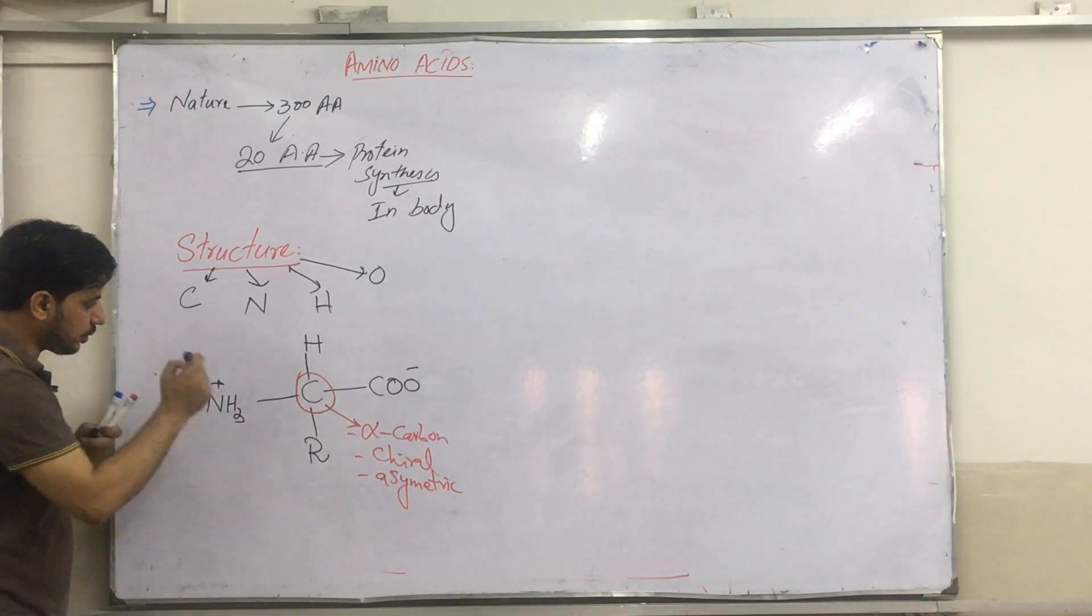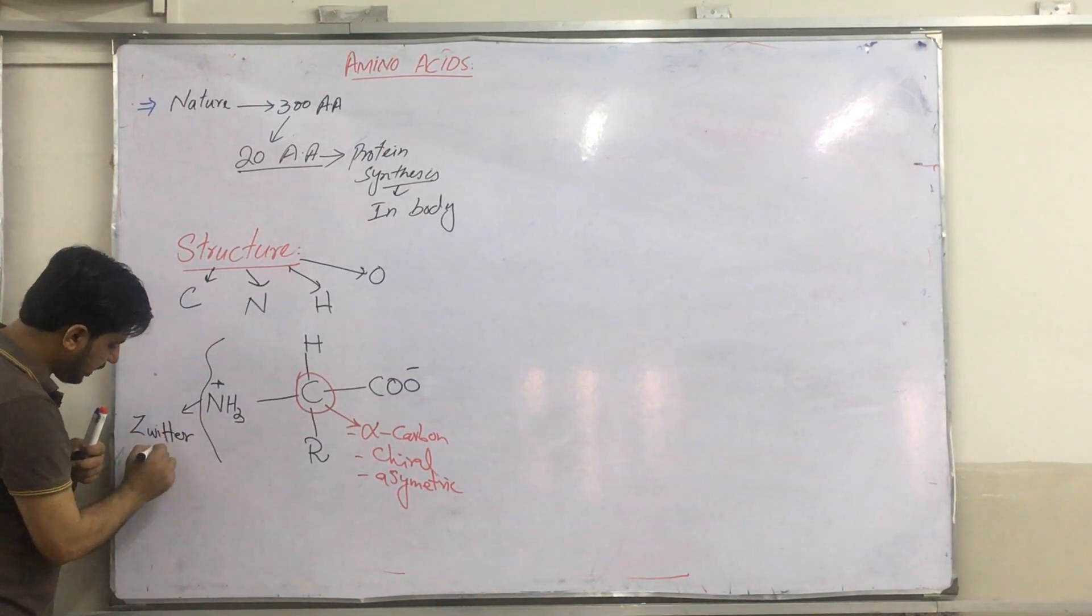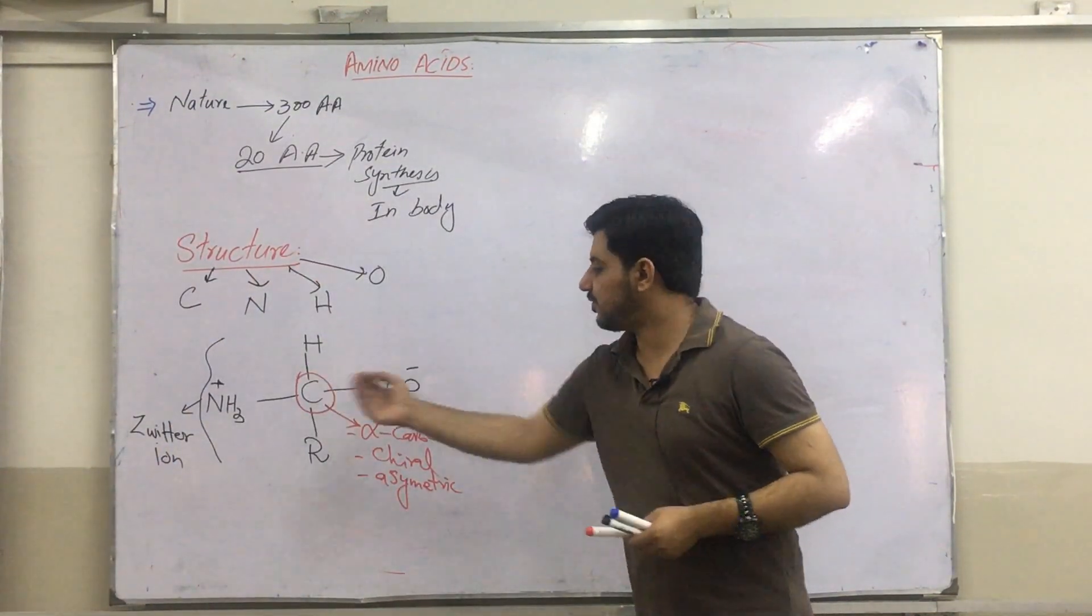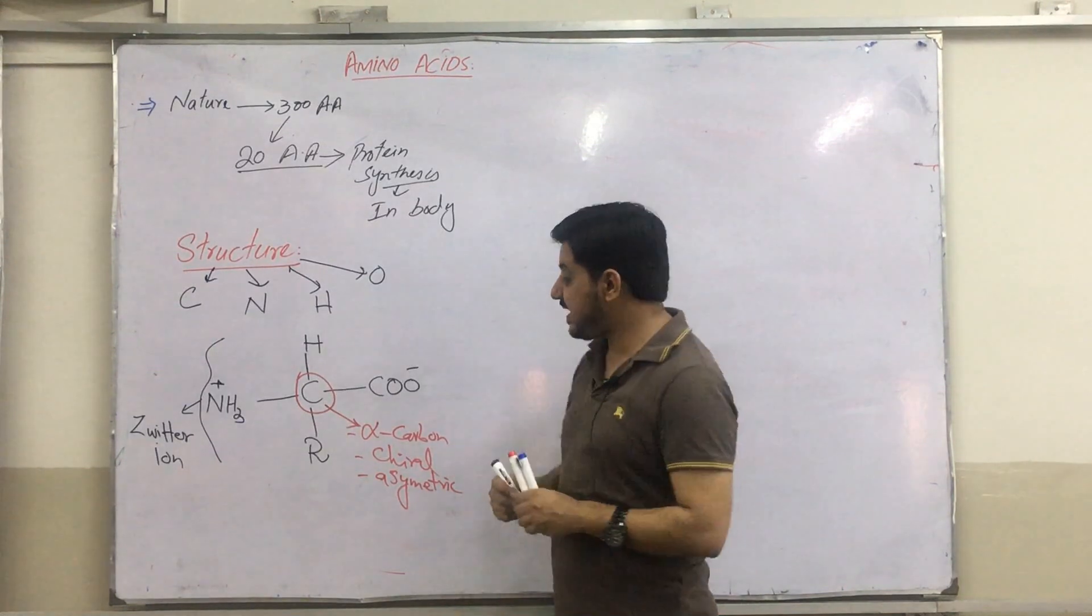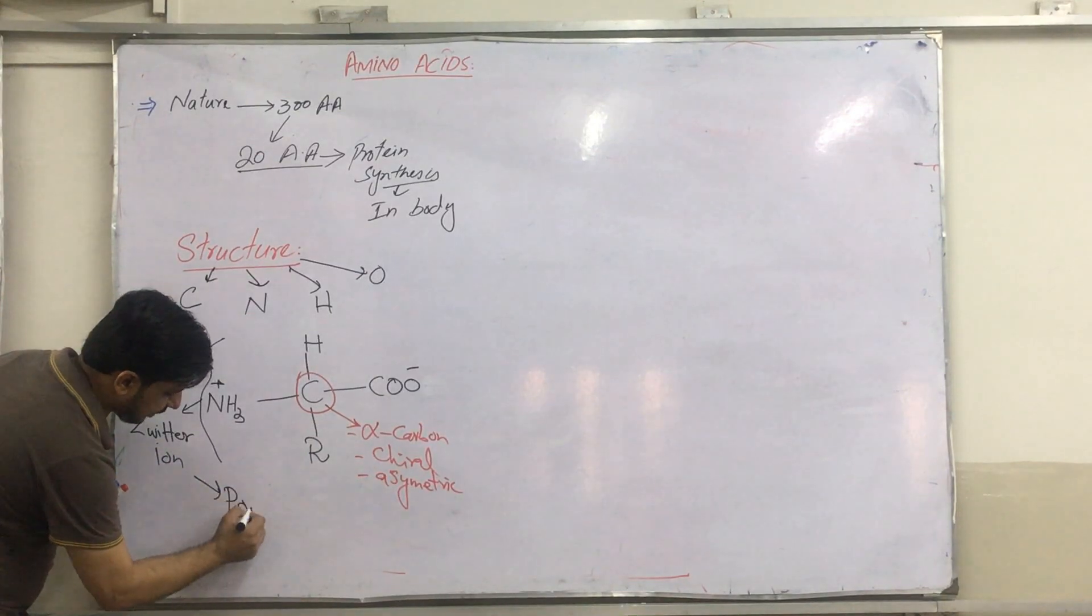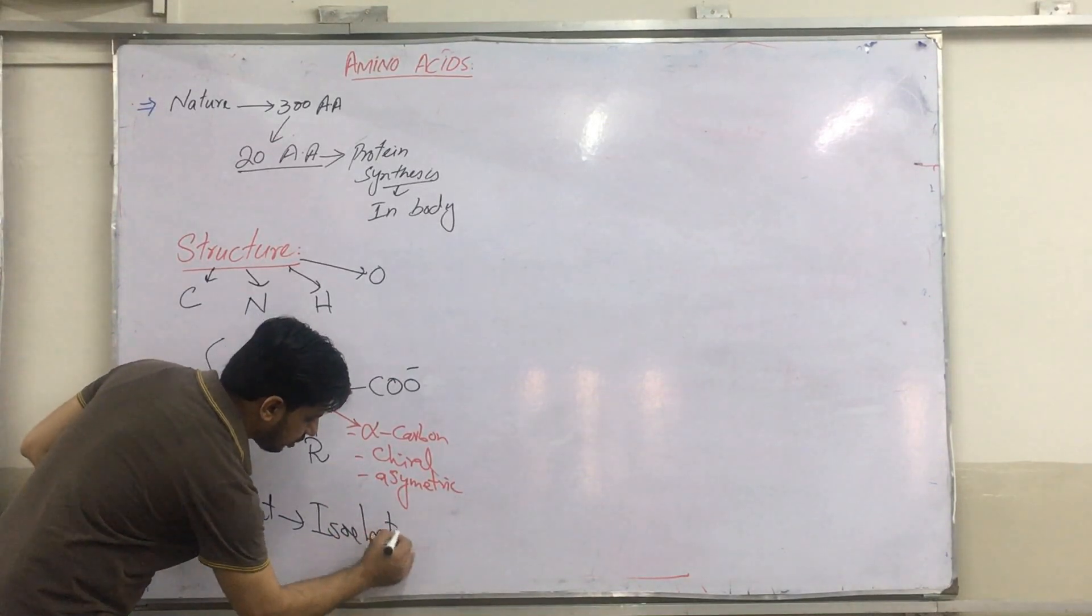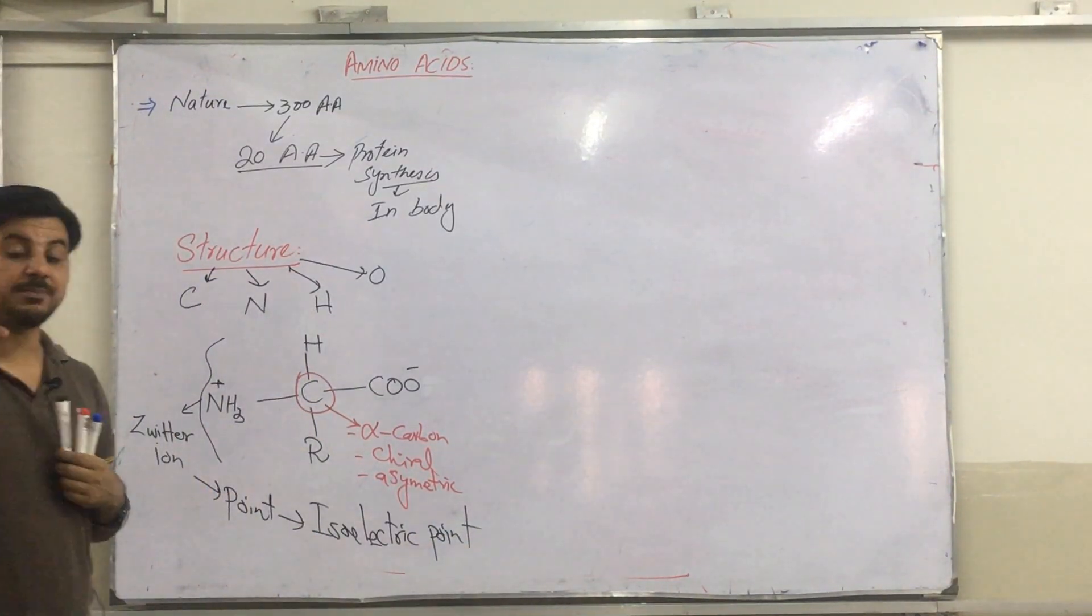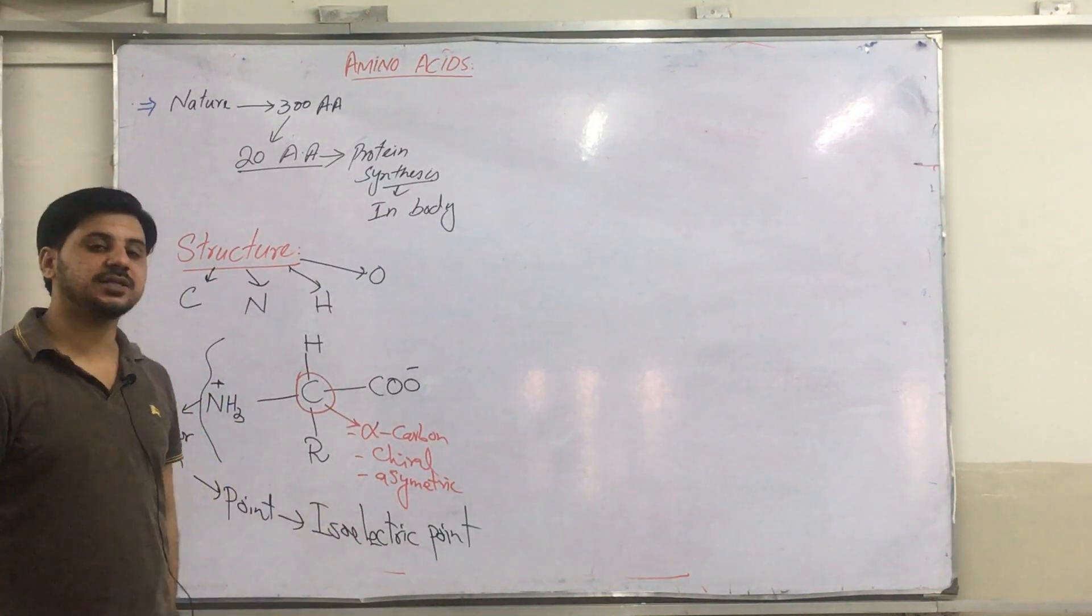Now, this whole structure is actually zwitterion because amino acid has positive as well as negative sides. That is why this one is called zwitterion, and the pH at which this zwitterion forms is the isoelectric point at physiological pH. Remember, at the physiological pH, if amino acid exists in this zwitterion, then that point is referred to as isoelectric point.